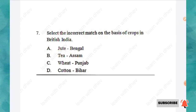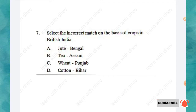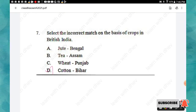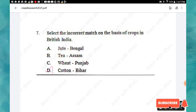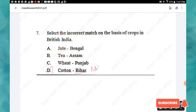Question 7: Select the incorrect match on the basis of crops in British India. Option A: Jute – Bengal. Option B: Tea – Assam. Option C: Wheat – Punjab. Option D: Cotton – Bihar. The incorrect match is option D. Cotton was introduced in Maharashtra and Punjab during the British period, not in Bihar. So the correct match would be Maharashtra.